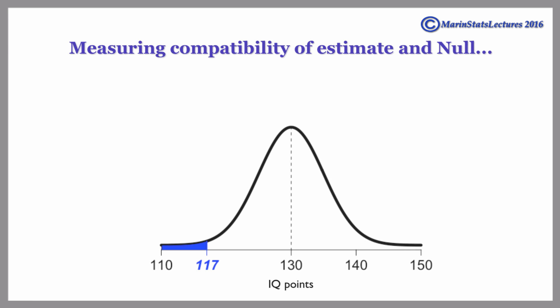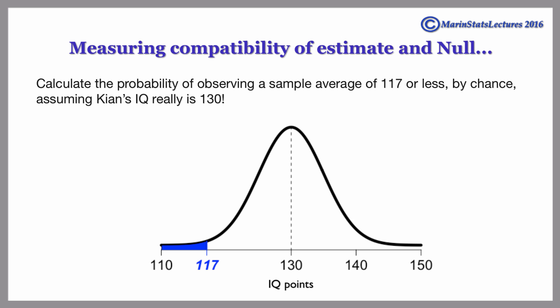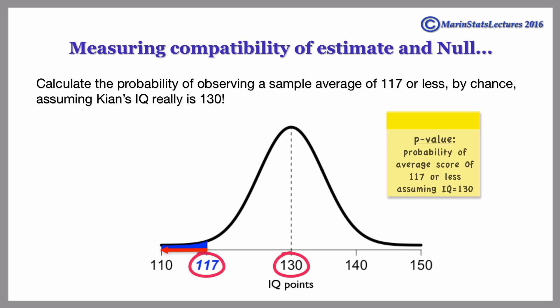To measure the compatibility between our estimate and the null value, we will calculate the probability of observing a sample average of 117 or less by chance, assuming Kian's IQ really is 130. This is what we call a p-value.